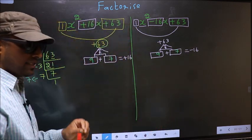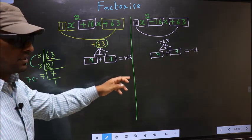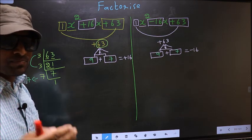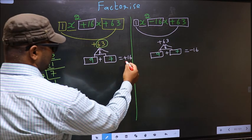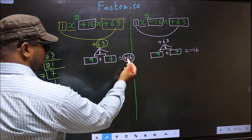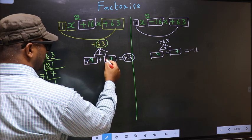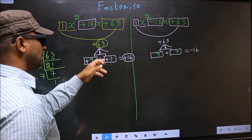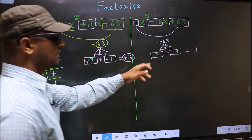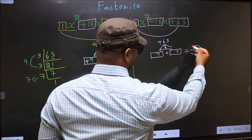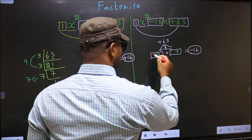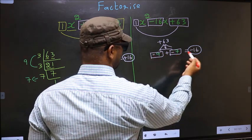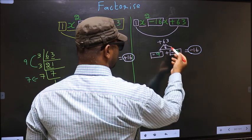Here is where the difference between the two comes, and the difference arises while adjusting the signs. Over here we have plus 16. To get plus 16, we should put plus here and also here: plus 9 plus 7 is plus 16, and plus 9 into plus 7 is plus 63. Over here we have minus 16. To get minus 16, we should put minus here and also here: minus 9 minus 7 is minus 16, and minus 9 into minus 7 is plus 63.